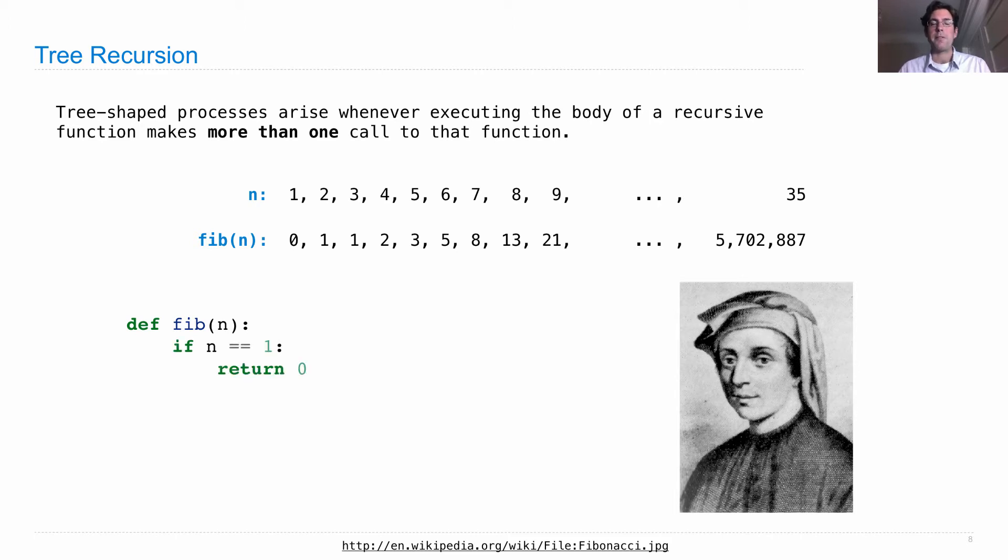If n is 1, we return 0. If n is 2, we return 1. Otherwise, we'll return the sum of the last two Fibonacci numbers. A nice direct implementation of the Fibonacci sequence. Let's code it up.